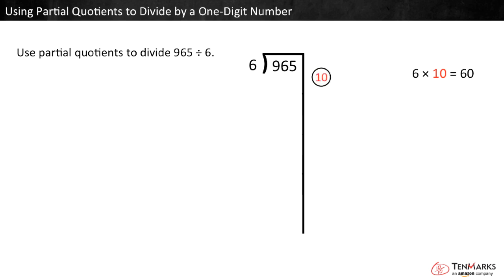You can write the partial quotient, 10, to the right, then subtract 60. We have 905 left to divide. Well, there are definitely 10 more groups of 6 in 905, so we can write 10 to the right, and then subtract another 60.